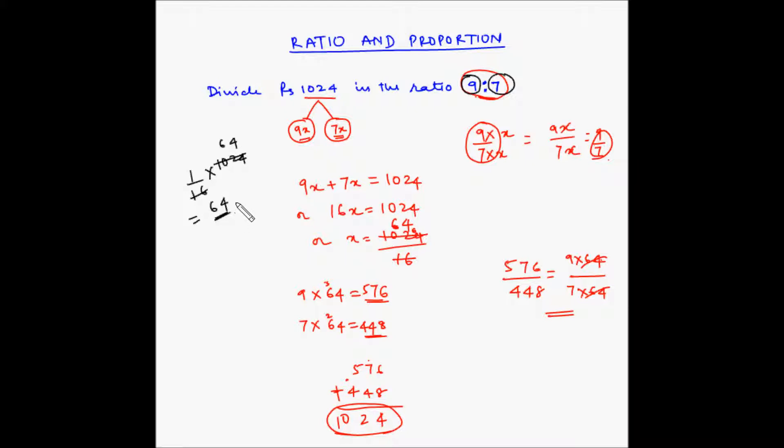And then, we multiply this with 9 and with 7, we will get the same answers. If you want to do a further shortcut, what you can do is you can straight away take 9. Basically, what we have done is we have taken 1 by 16 multiplied by 1024 multiplied by 9. This portion is equal to 64 which is this and then, we multiplied it by 9, or we can also write it as 9 by 16 multiplied by 1024. And the second one will be 7 by 16 multiplied by 1024.